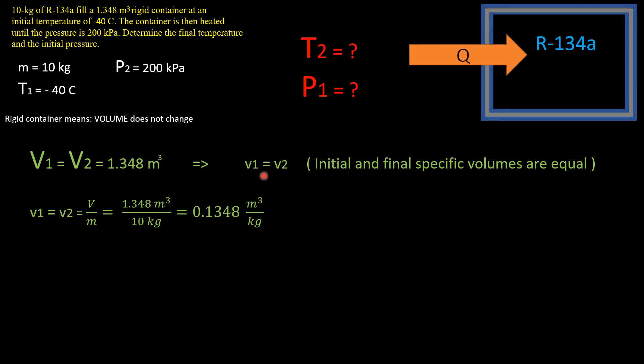Mass will not change either. Therefore, we can conclude that the specific volume v1 will be the same as specific volume v2. Write up the specific volume formula, which is simply volume over mass. We have both of these variables given, so we plug them in and get 0.1348 cubic meters per kilogram. This is the specific volume of our refrigerant at state one and state two.